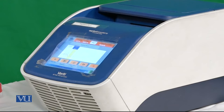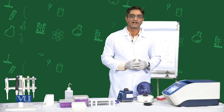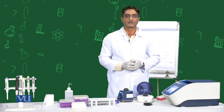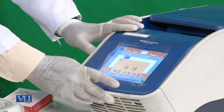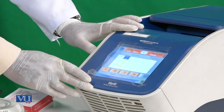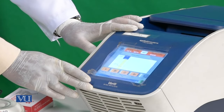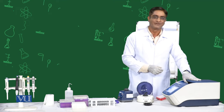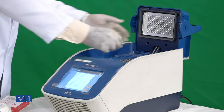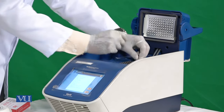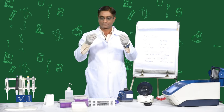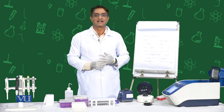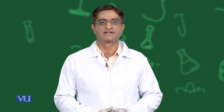Our reaction is completed after 60 minutes and the samples are stored automatically at 4 degrees centigrade by the thermocycler. Now we will take out our tubes and proceed to gel electrophoresis. For the gel electrophoresis procedure, please see the gel electrophoresis practical video.